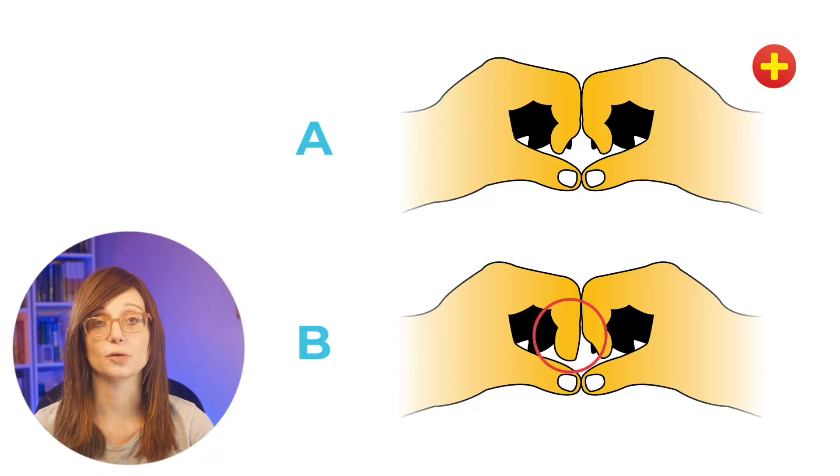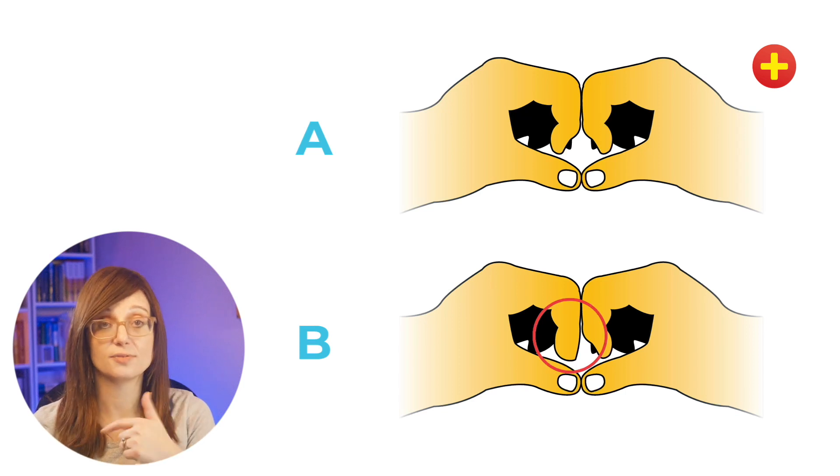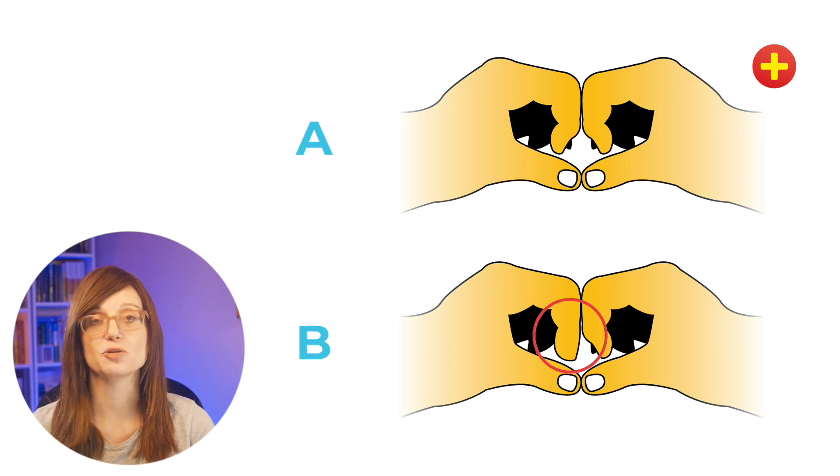There's also a modified version of Elson's test. So for this, you get the patient to put the uninjured and injured fingers, the same finger on opposite hands, together knuckle to knuckle in 90 degrees with PIPJ flexion. And you have each middle phalanx pressed against each other. And you ask the patient to extend both DIP joints.